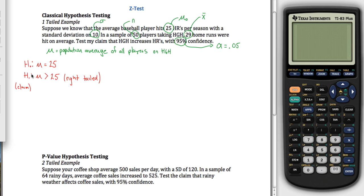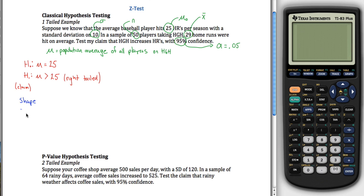Once you've stated your null and alternative hypothesis, we're going to state the shape, center, and spread of our distribution. For the shape, just like every example in this class, it'll be approximately normal — because N is greater than or equal to 30. Our cutoff for applying the central limit theorem is N ≥ 30, and we have N = 50, so it's approximately normal. When I draw my picture, I'll draw it approximately normal.